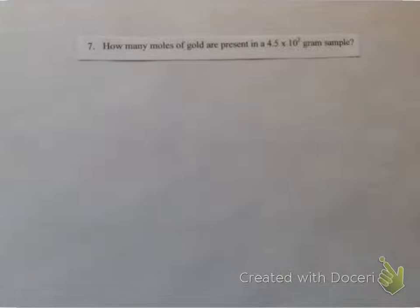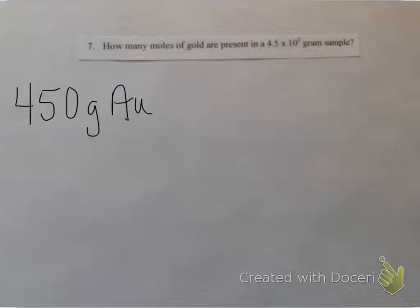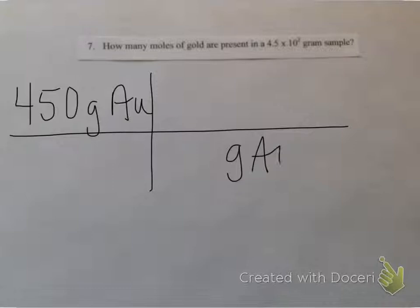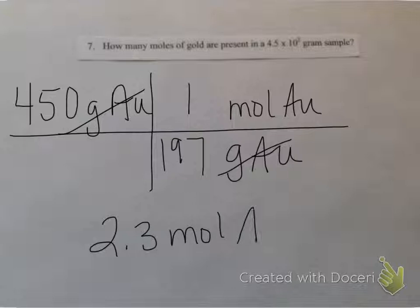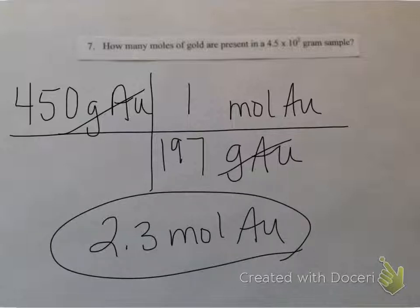For number 7, I'm asked to find the moles of gold present in a 450 gram sample. So I have 450 grams of gold — be careful to use Au and not Ag here. I have grams of Au at the bottom and I'm allowed to put moles on top. Any time I see mole, I put 1. When I see grams, I look up the periodic table — gold is 197. The grams of gold cancel out. Multiply the top and divide by the bottom, and I get 2.3 moles of gold. Remember the 1 is an exact number and we don't use it for sig figs.